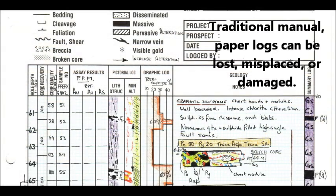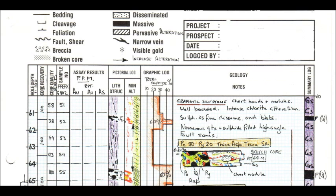Traditionally, drillcore logging was done by a geologist looking with a lens at the split core, scraping it with a knife, and writing notes in a notebook. This data then became a permanent record for the exploration area.